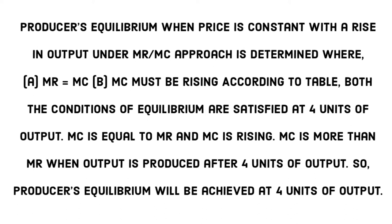According to the table, both conditions of equilibrium are satisfied at four units of output. At unit number 4, marginal revenue and marginal cost are equal. At this point, the producer equilibrium is reached. Marginal cost is rising after that, and marginal cost exceeds marginal revenue when output is produced beyond four units. So producer equilibrium will be achieved at four units of output, where profit is maximized. However, if the second condition is not fulfilled, equilibrium cannot be confirmed.